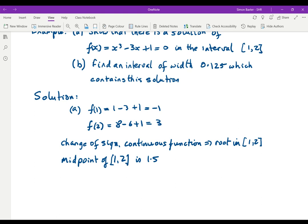So now we look at f of 1.5. f of 1.5 is minus 0.125. We already know that f of 2 is 3.